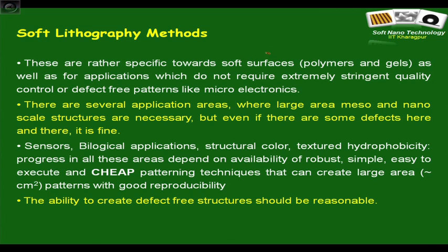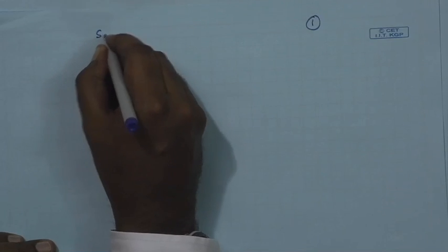Soft lithography is a group of techniques specific for soft surfaces like polymers and gels, particularly for applications that do not require extremely stringent quality control. Several application areas require large-area nano and mesoscale structures where some defects are acceptable and, more importantly, there is absolutely no need for the structures to be on a photoresist. You want the patterns on other materials — a capability that is severely limited in classical photolithography.